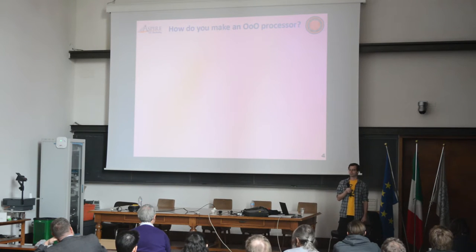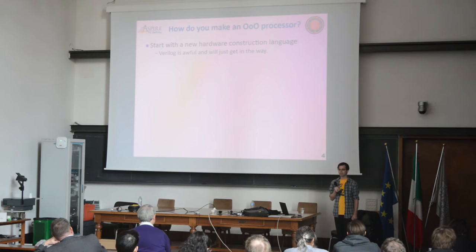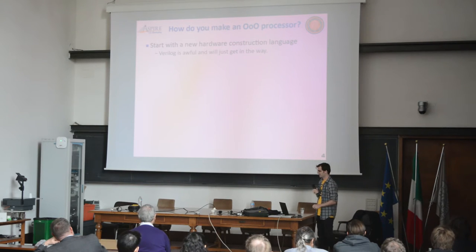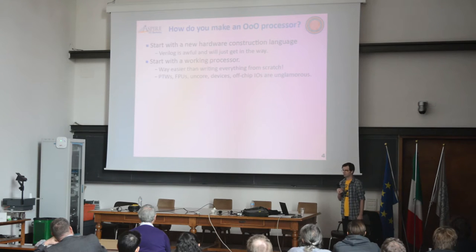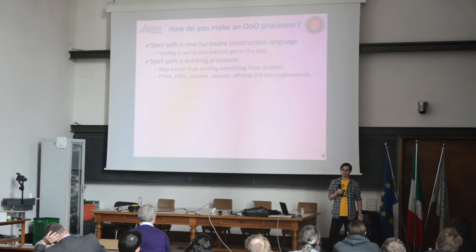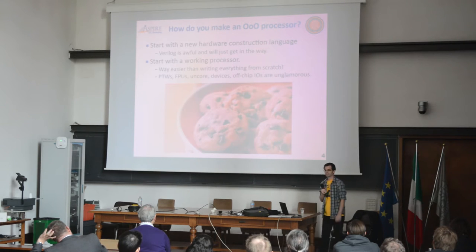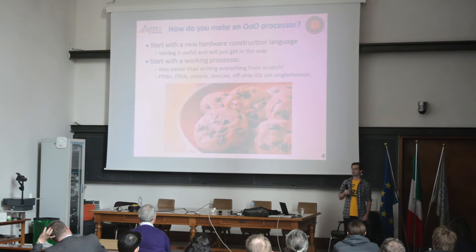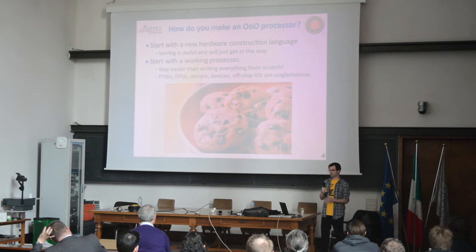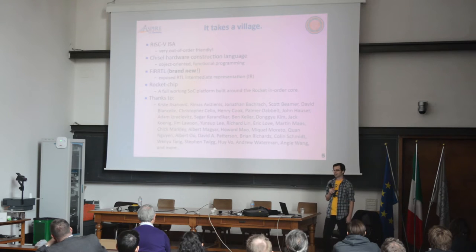The first question is: how do you make an out-of-order processor? It turns out it's actually pretty easy. Step one: just make a new hardware language — Verilog is really awful and it's just going to slow you down. Step two: start with a working processor. It's way easier than starting from scratch, and there are a lot of unglamorous parts — the IOs, debug stuff, devices — that if you write yourself you'll just have bugs anyway. That advice is kind of like: how do you make a chocolate chip cookie? Start with a cookie, add the chocolate chips, and claim credit. In reality, it takes a village.